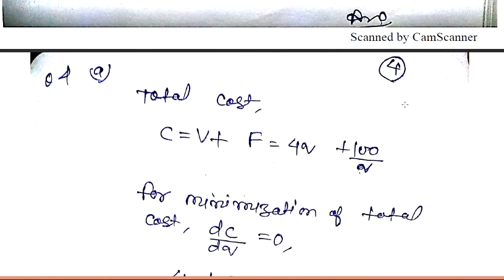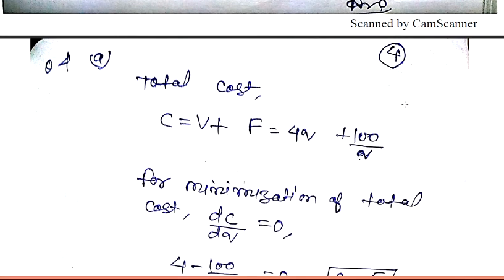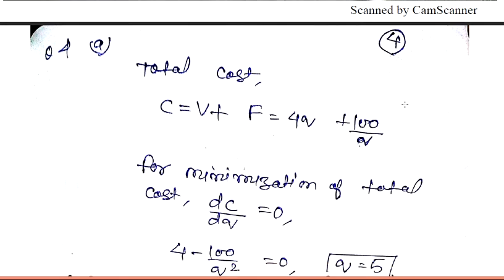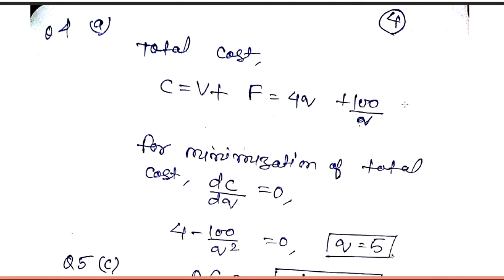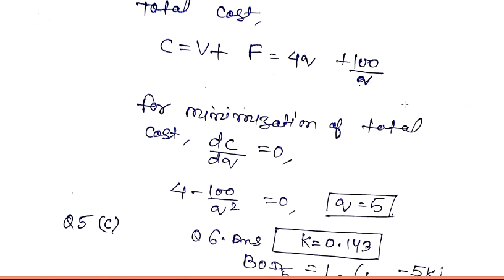Question number four: total cost C = V + F, where V = 4q and F = 100/q. For minimization of total cost, we differentiate with respect to q and equate to zero. We find the value of q as 5 units.